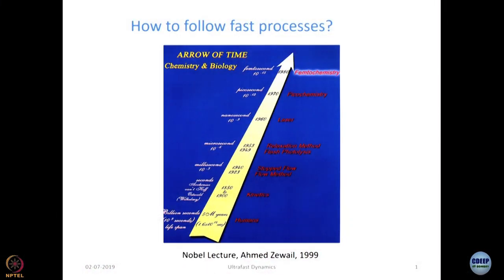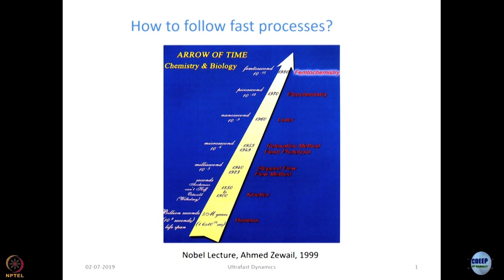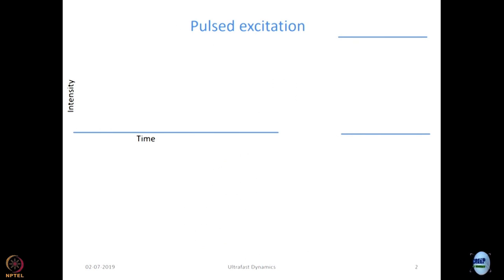This is something we had shown earlier from Zewail's Nobel lecture of 1999, 'Arrow of Time.' The capability of following ultrafast processes has increased tremendously over the last few decades. In the 1950s one could measure microseconds, in the 1960s nanoseconds, and from the 1960s onwards the journey towards picosecond, femtosecond, and subsequently attosecond has been quite rapid. It is not very difficult anymore to measure processes in the femtosecond time regime.